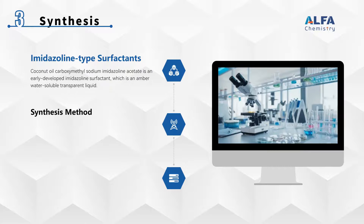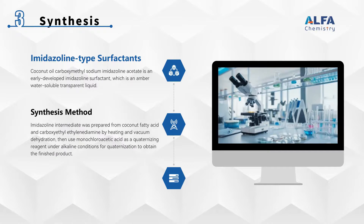Coconut oil carboxymethyl sodium imidazoline acetate is an early developed imidazoline surfactant, which is an amber water-soluble transparent liquid. The synthesis method is that an imidazoline intermediate was prepared from coconut fatty acid and carboxyethyl ethylene diamine by heating and vacuum dehydration, then monochloroacetic acid was used as a quaternizing reagent under alkaline conditions for quaternization to obtain the finished product. Its reaction equation is as follows.